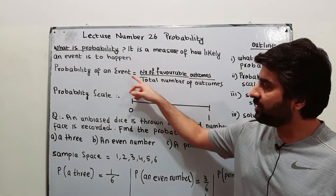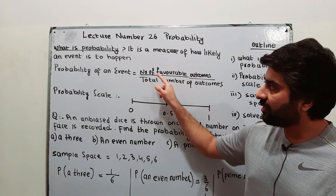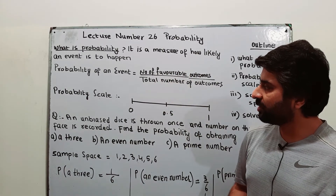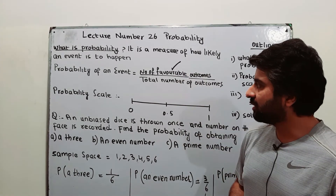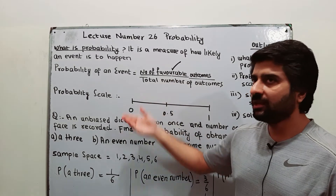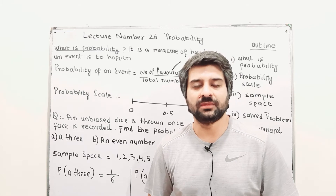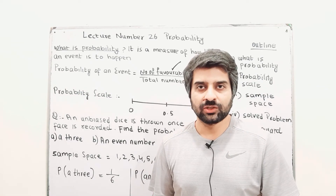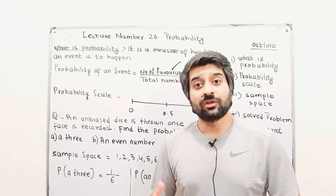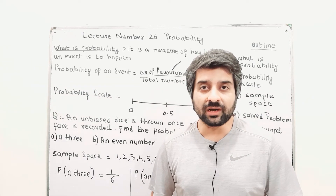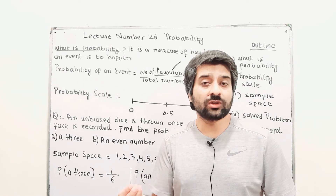The probability of an event is the number of favorable outcomes divided by the total number of outcomes. The favorable outcome means when you do an experiment you have different outcomes — for example, you go into your exam and either you pass or you fail, so there are two outcomes: pass or fail. The favorable outcome for everyone is obviously to pass. So number of favorable outcomes means what you want out of the total results.